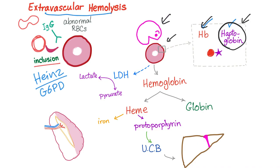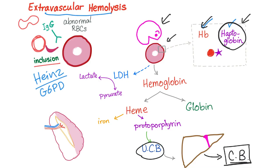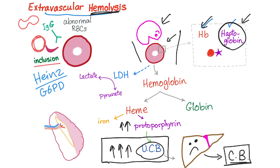After the red blood cell is attacked by the macrophage, hemoglobin — which has heme and globin — is released. Heme consists of iron and protoporphyrin. Protoporphyrin is converted into unconjugated bilirubin, which goes to the liver to get conjugated. In normal circumstances the liver can handle all the unconjugated bilirubin, but during hemolysis, a huge amount of RBCs are destroyed, producing a huge amount of unconjugated bilirubin. The liver can't handle this, so unconjugated bilirubin in the blood increases.